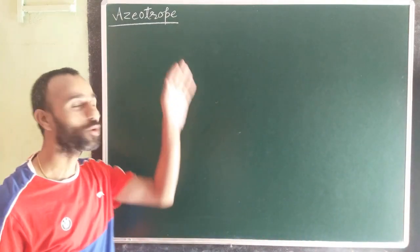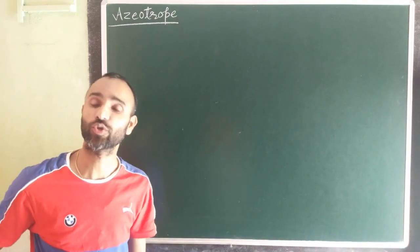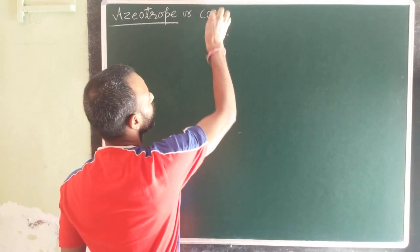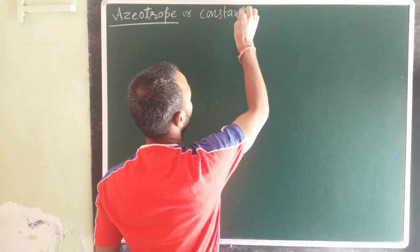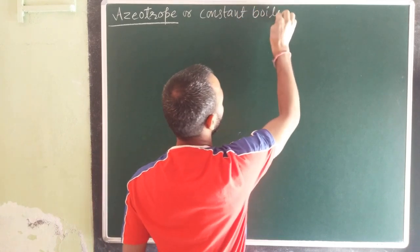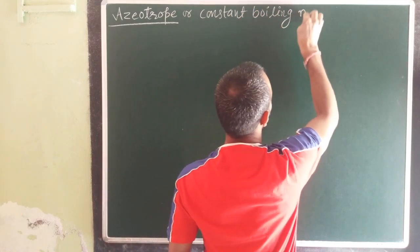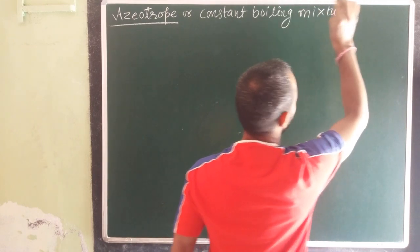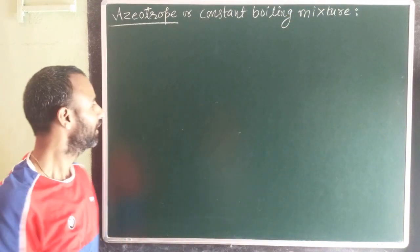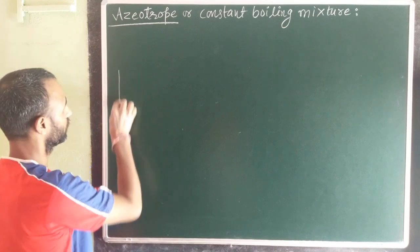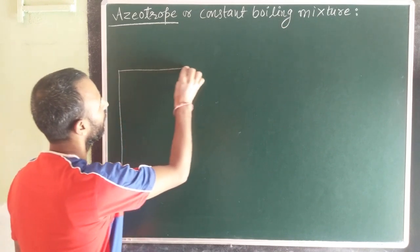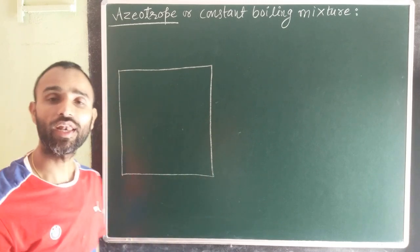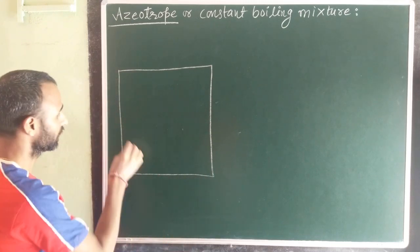Today's topic is azeotropes, also known as constant boiling mixtures. Let us explain what this actually is. Solutions having large positive or large negative deviation from ideal behavior are relevant here.